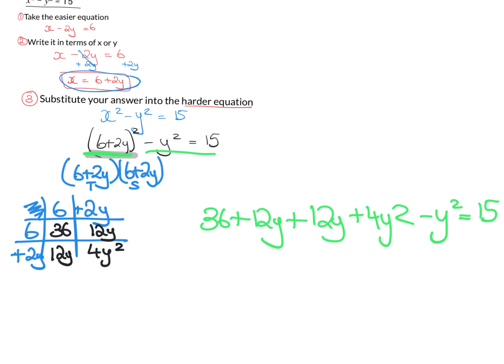So can I do a little bit of tidying up? I can. 12y and 12y is 24y. 4y squared minus 1y squared is 3y squared. So I always like to write the highest power first. So 3y squared plus 24y. And then I have, let's bring minus 15 across. So it'll be 36 minus 15 and I am getting 21. So plus 21 equals 0. So the next step, step 4, is always to make this equal 0. And you can see I just did that there.